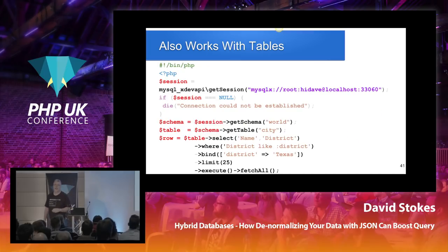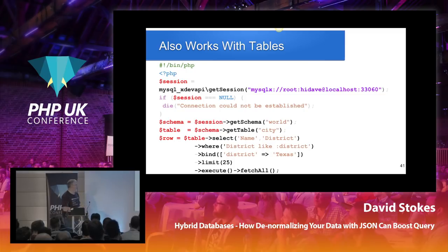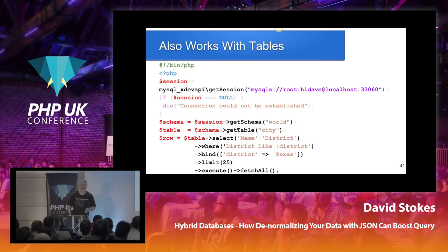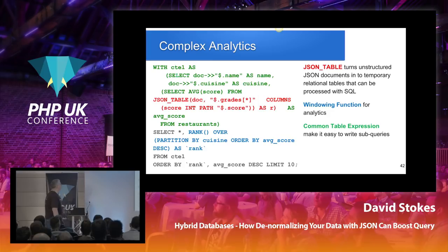This also works with tables. If you want to use the new API with your existing or new tables, it's very similar — instead of 'find', you now have the keyword 'select'. So we're going to select name and district from a table called city where district is like a variable named district, plug in the value 'Texas', ask for only the first 25 records, and go out and fetch all.